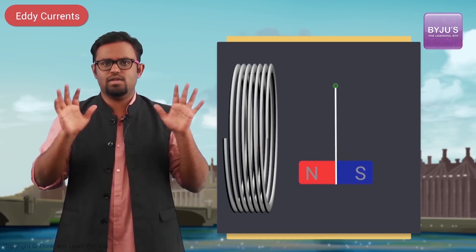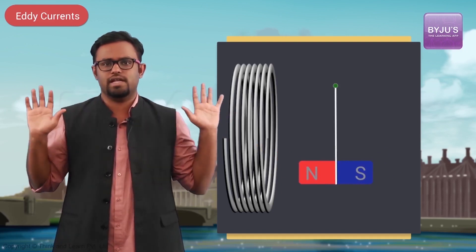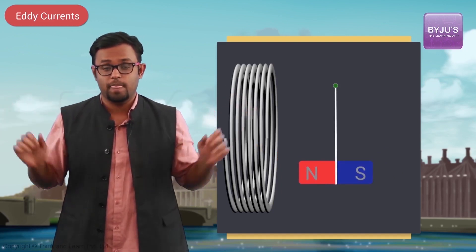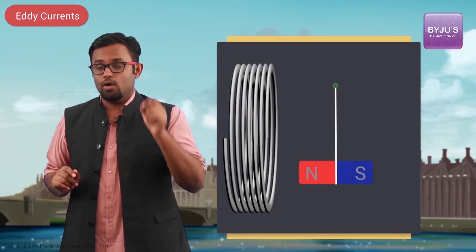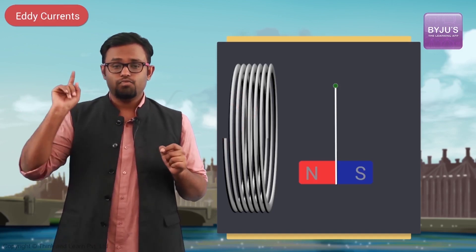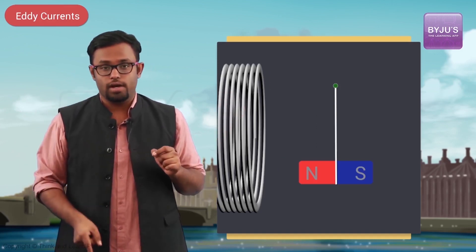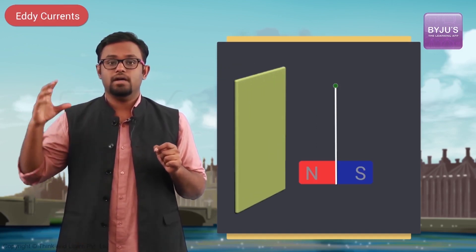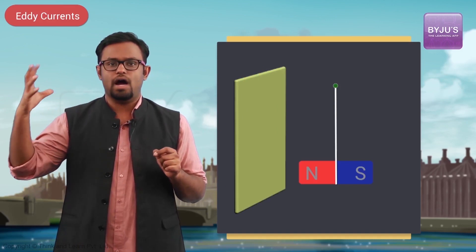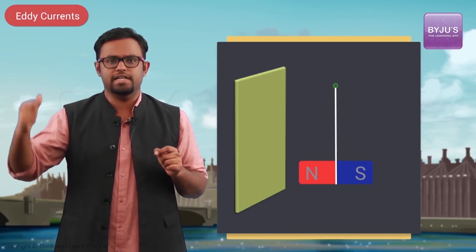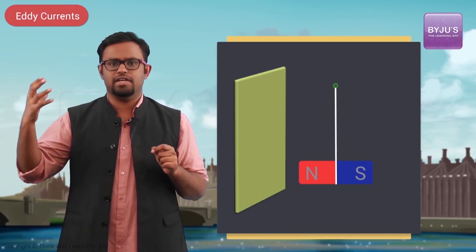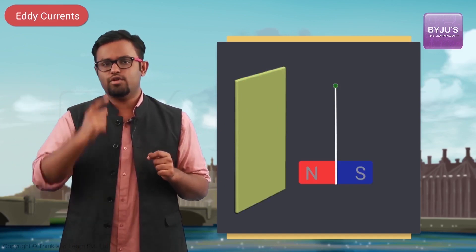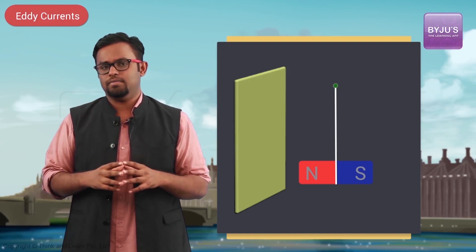This is very simple — something we already know, nothing new. But now, instead of that coil, if a hard metal is brought there — let's say an iron plate — then what do you think will happen?